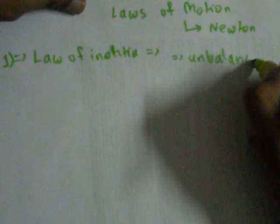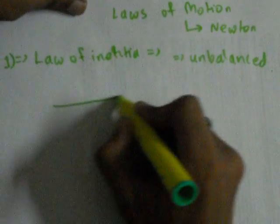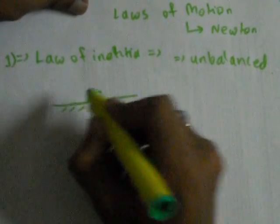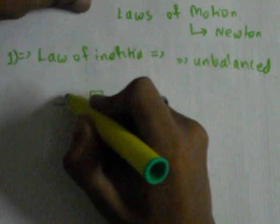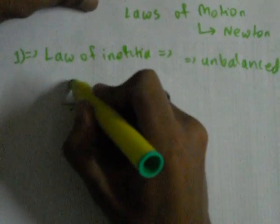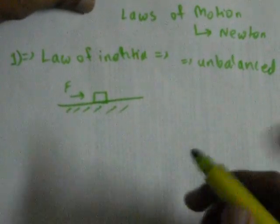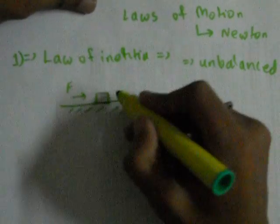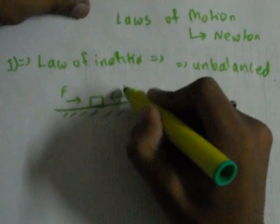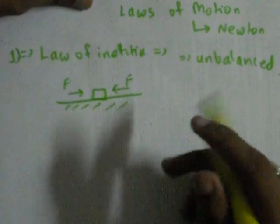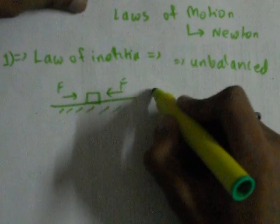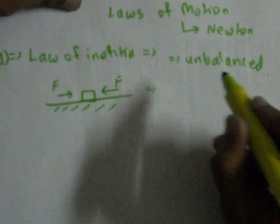For example, if I take a block over here on a surface at the state of rest, unless and until I apply an external force on it, it won't move. But if I apply a force F in this direction and equal opposite force in opposite direction, then also it won't move. To move the block, we need an unbalanced external force.